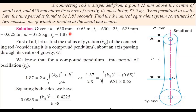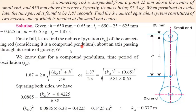The mass is given as 37.5 kg. When permitted to oscillate, the time period is found to be 1.87 seconds. We need to find the dynamically equivalent system constituted of two masses — one at the small end and another at the big end. First, we need to determine the radius of gyration. Since it is permitted to oscillate, we consider it as a compound pendulum.